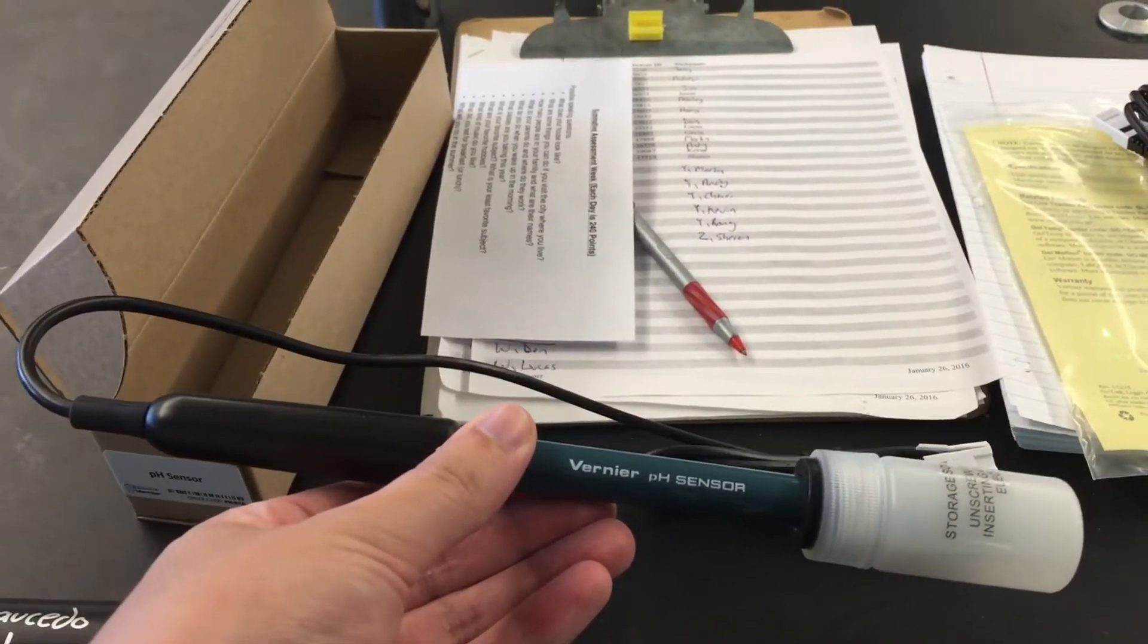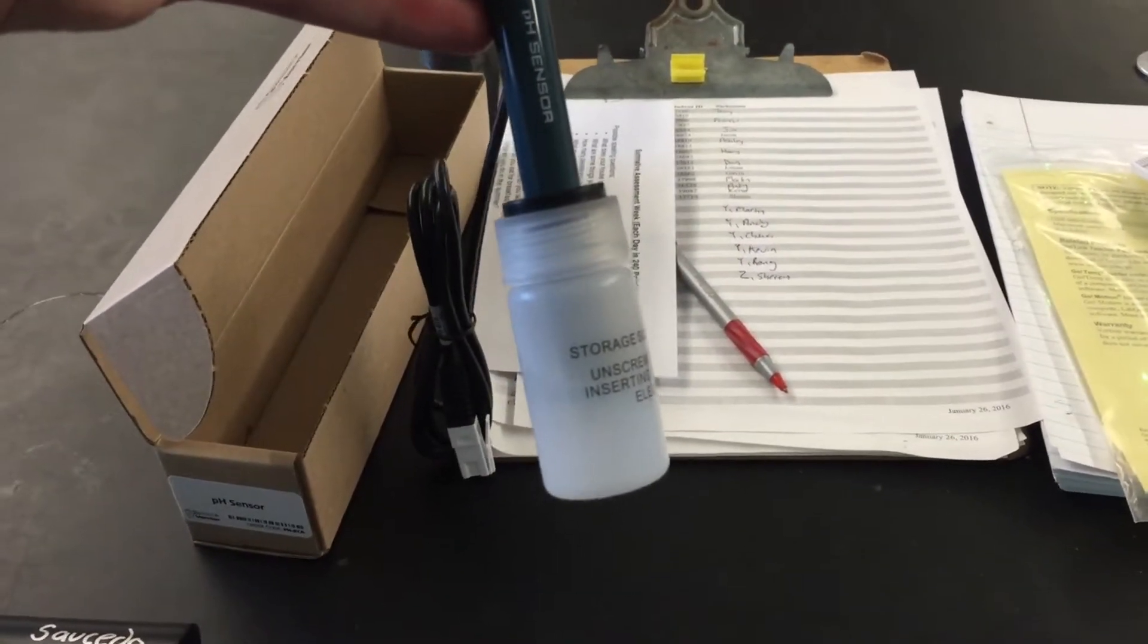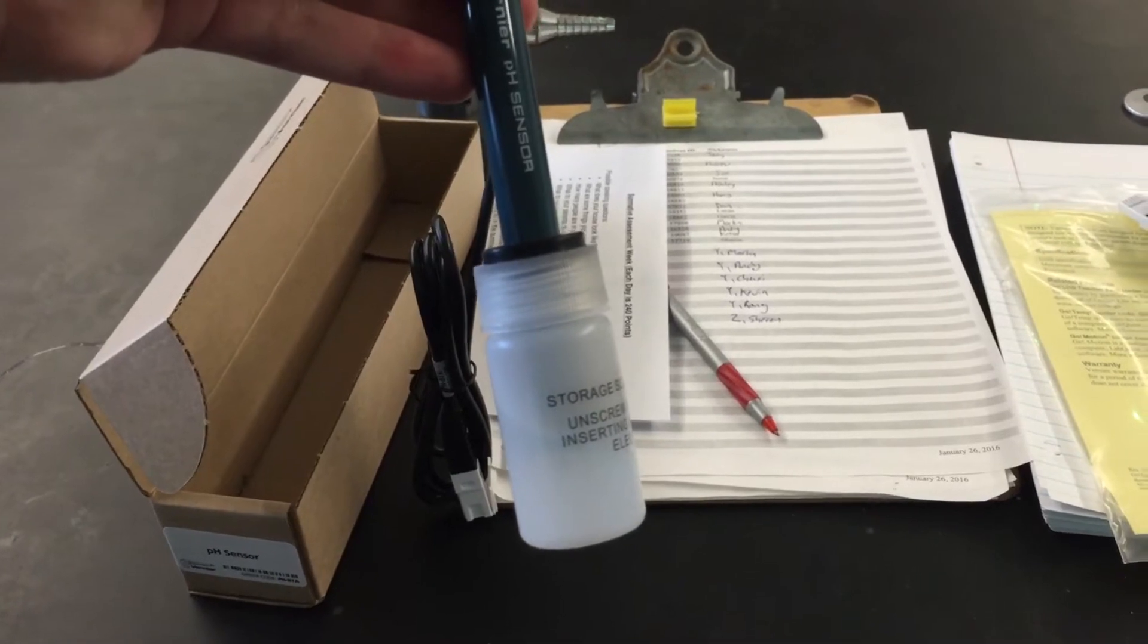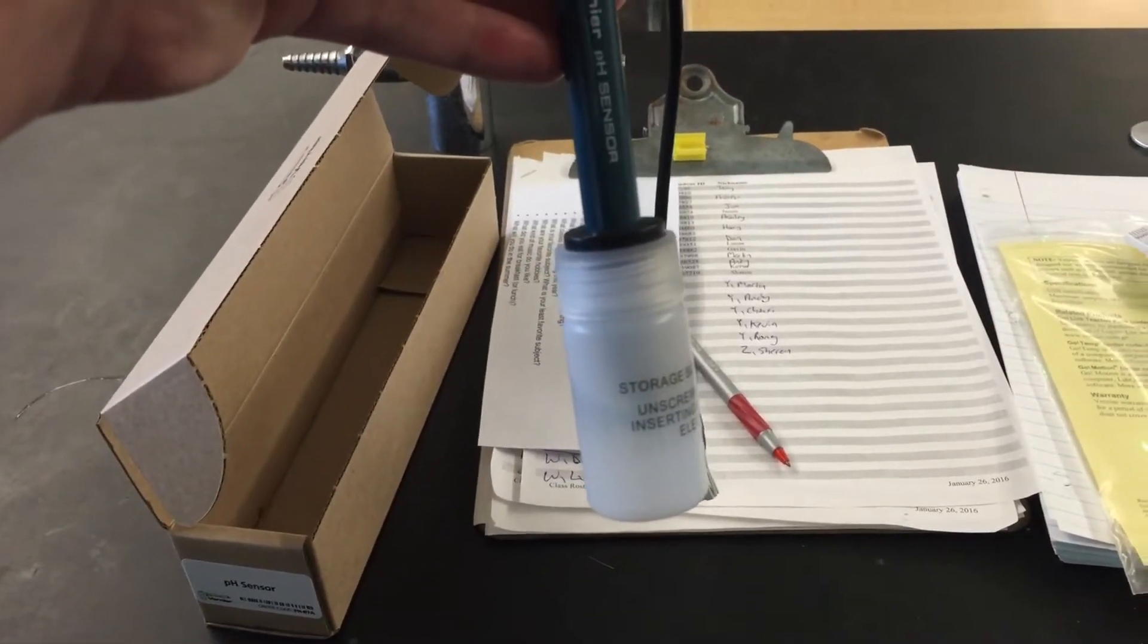One of the most important things to recognize is that you have this weird little container of fluid here connected to the pH electrode. You need to unscrew this before you do any analysis.